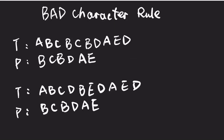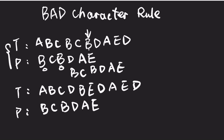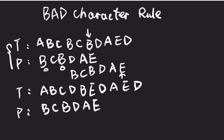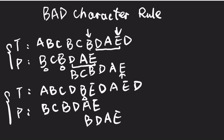Let's talk about the bad character rule. Here is an example: we compare from the rightmost position. There are two B's here — we align to the rightmost B because otherwise we may miss a possible match. So the text pointer should be increased to the position of the rightmost B, and the increment is the same as the distance from the rightmost B to the end of the pattern string.